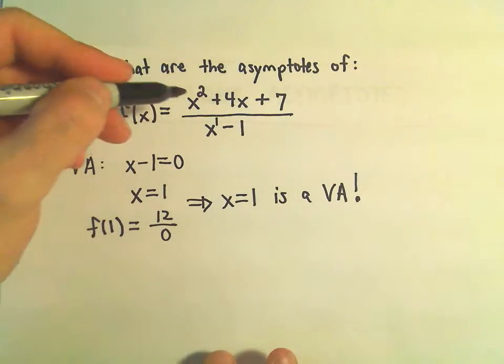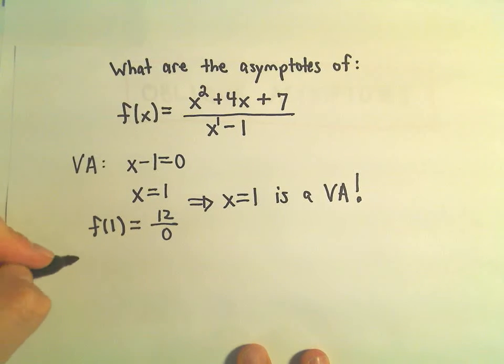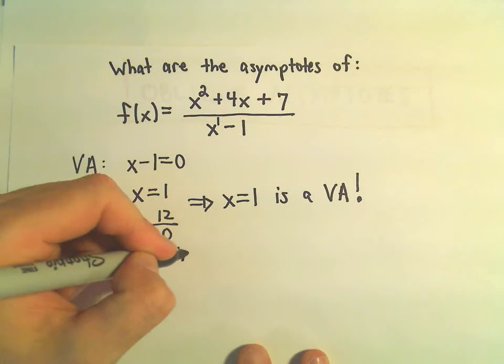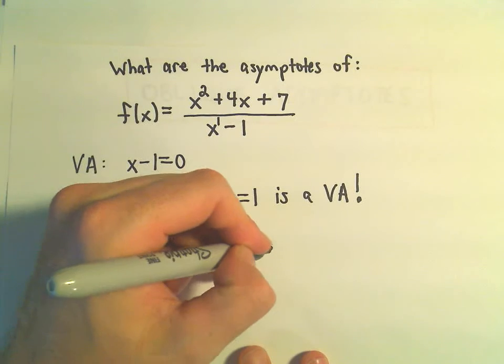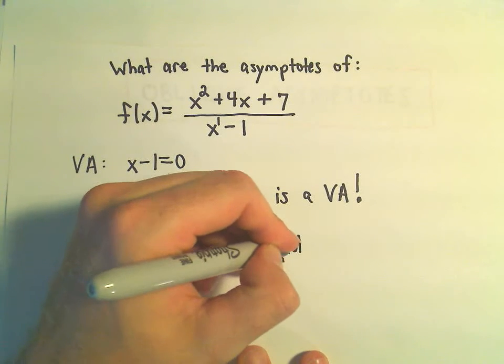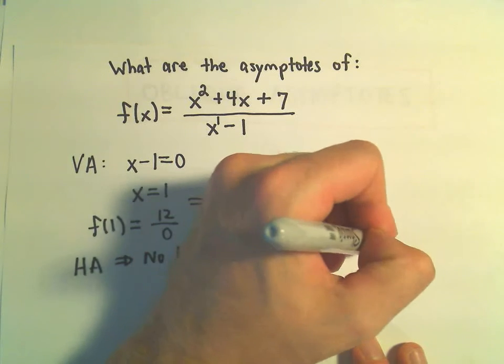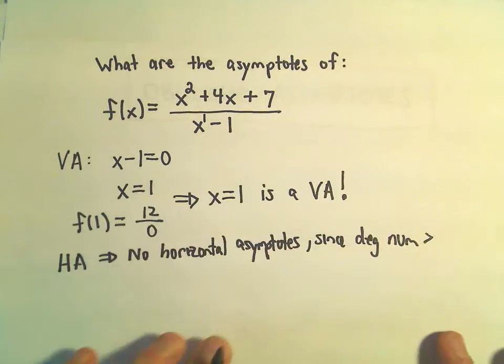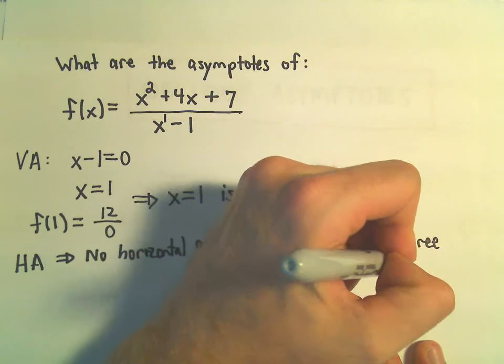Again, since the numerator is larger degree than the denominator, that tells me that there are no horizontal asymptotes. So no horizontal asymptotes, since the degree of the numerator is larger than the degree of the denominator.